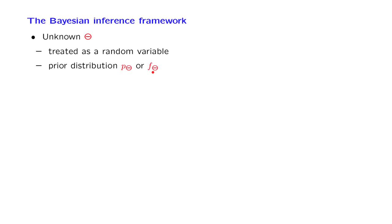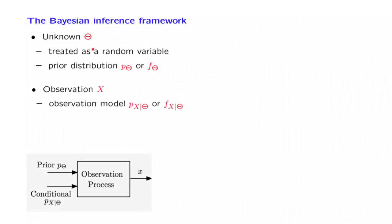This is the prior distribution, what we believe about theta before we obtain any data. Then we obtain some data, an observation. That observation is a random variable, but when the process gets realized, we observe an actual numerical value. The observation process is modeled in terms of a probabilistic model.